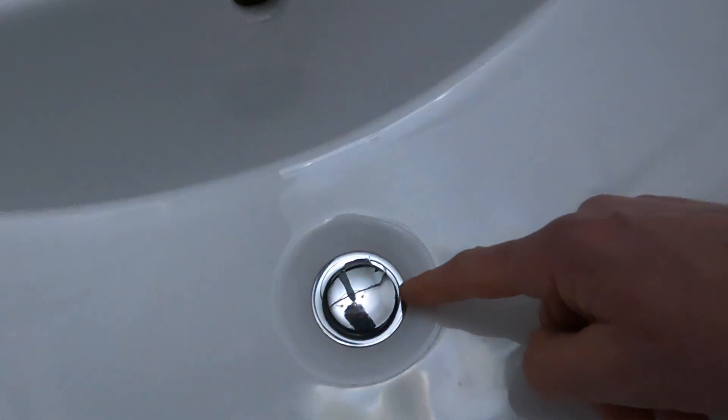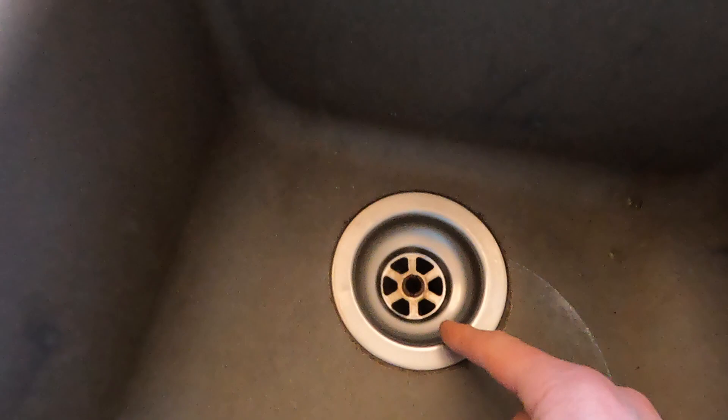Let's have a look. Number one is a running toilet. Number two, a slow bathtub drain. Number three, a slow basin drain. And number four, a slow kitchen sink drain.